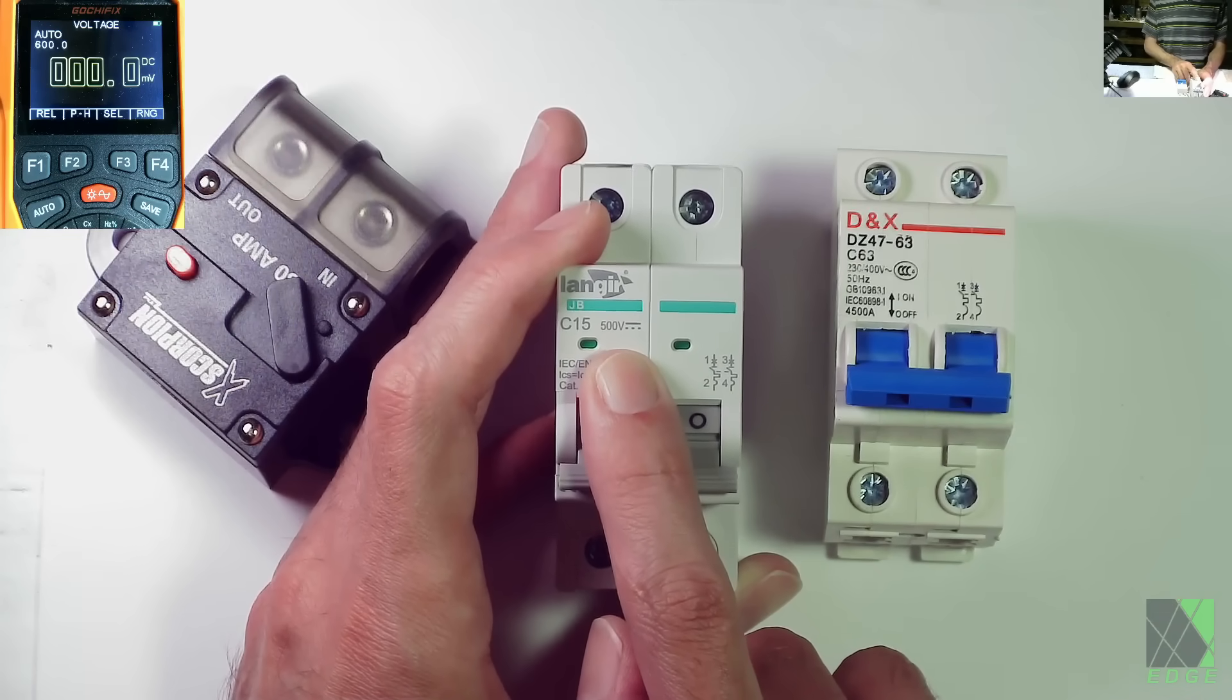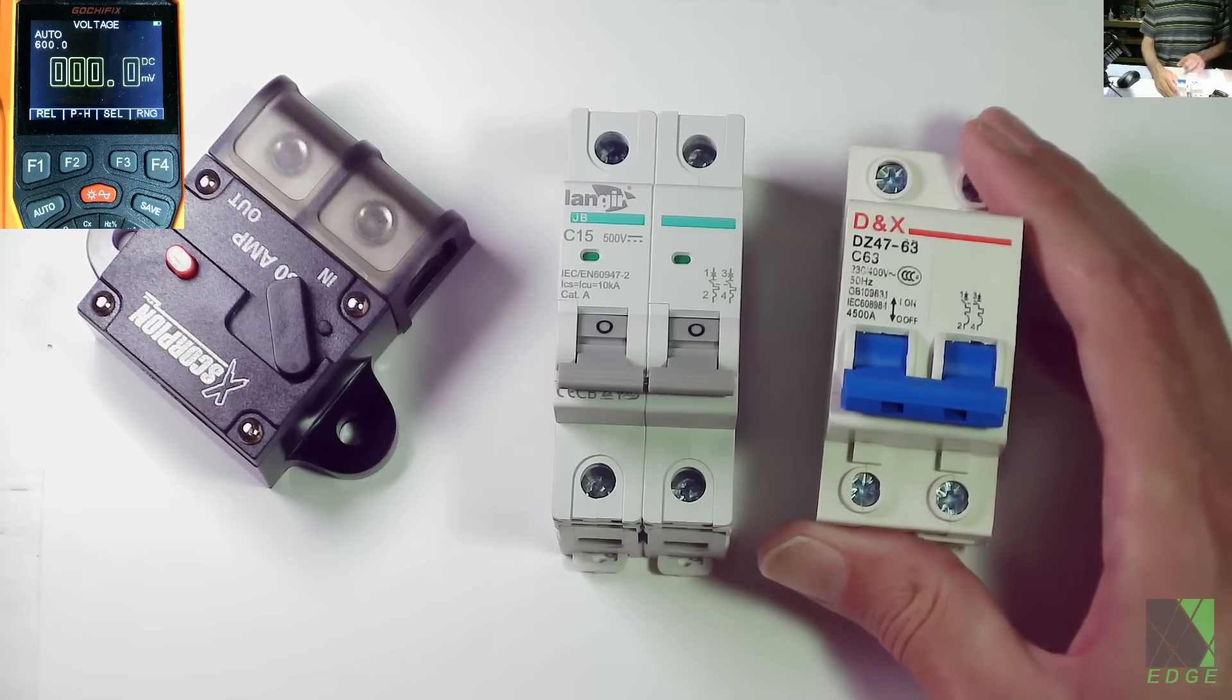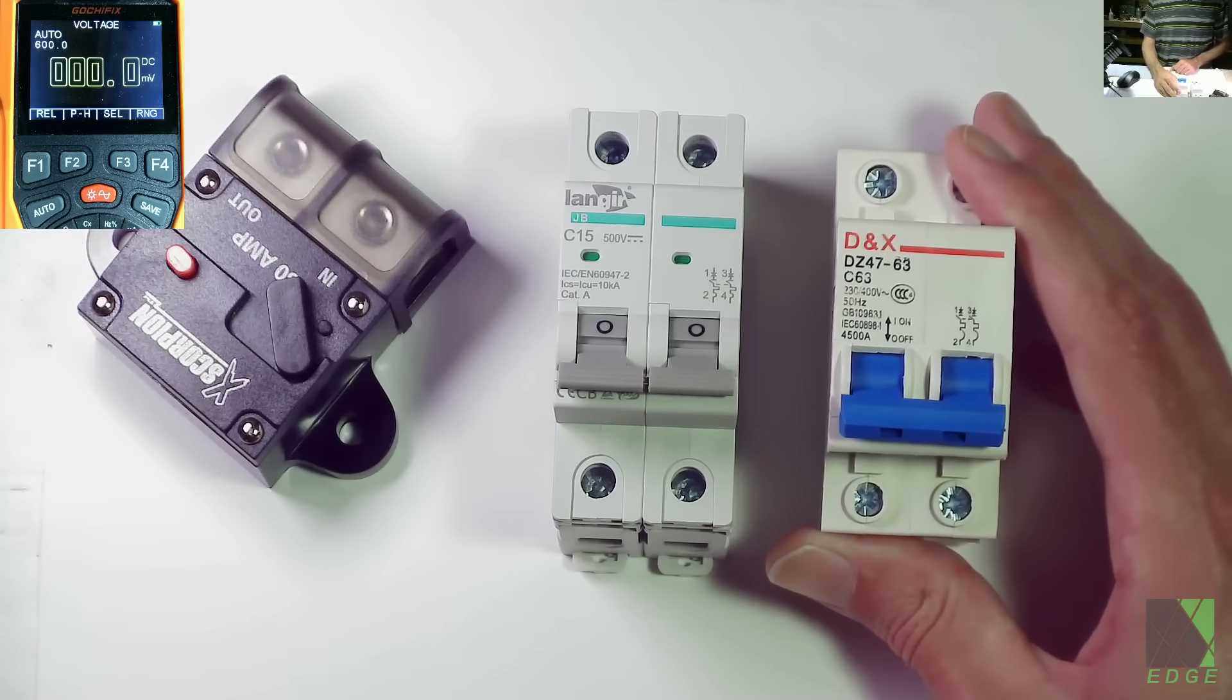For example, if you have some solar panels putting out about 50 volts DC into your charge controller, why not just use an AC breaker? Same thing, right? Wrong. It's not the same thing.